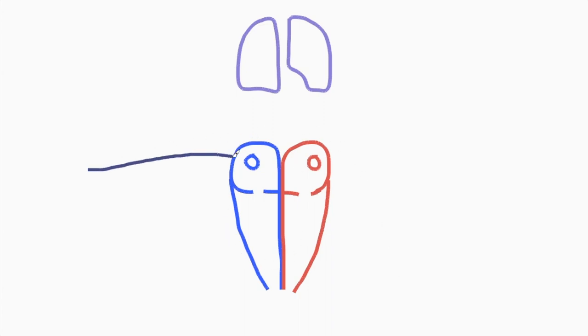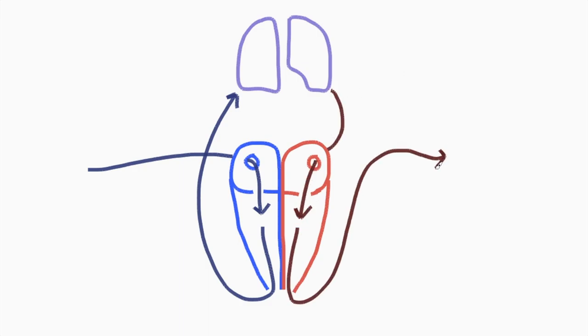The heart receives blood with low oxygen from the body. It pumps this blood to the lungs where it receives oxygen. Back to the heart now and then back out to the body.